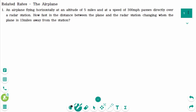This video will cover questions relating to the topic of related rates. This is Question 1: an airplane flying horizontally at an altitude of 5 miles.